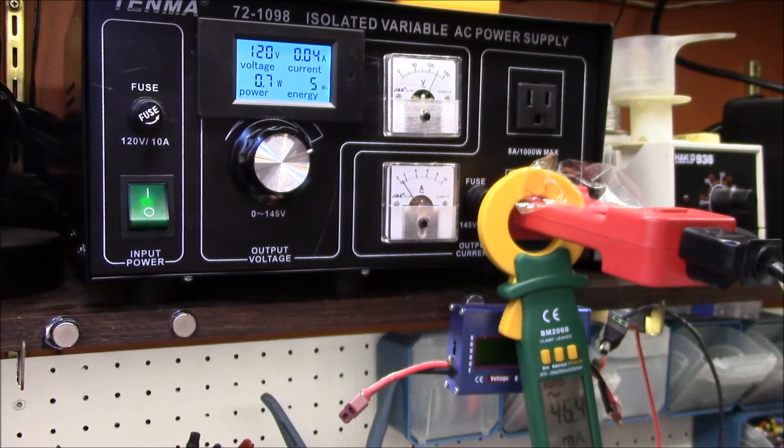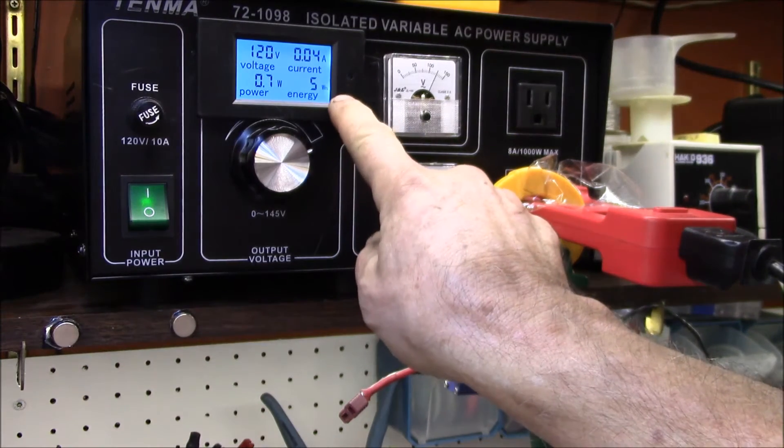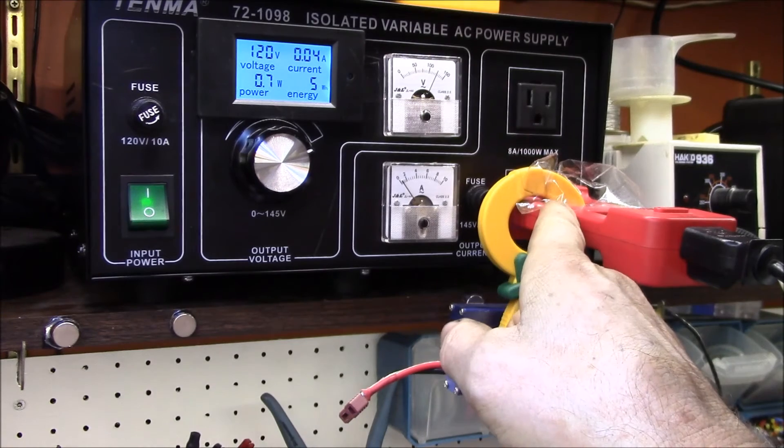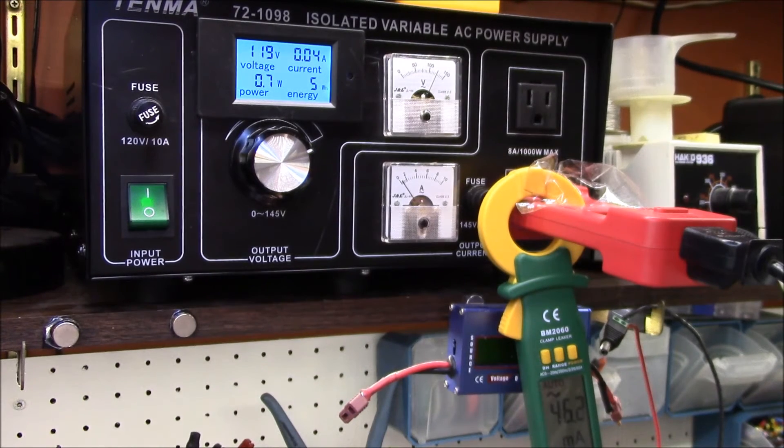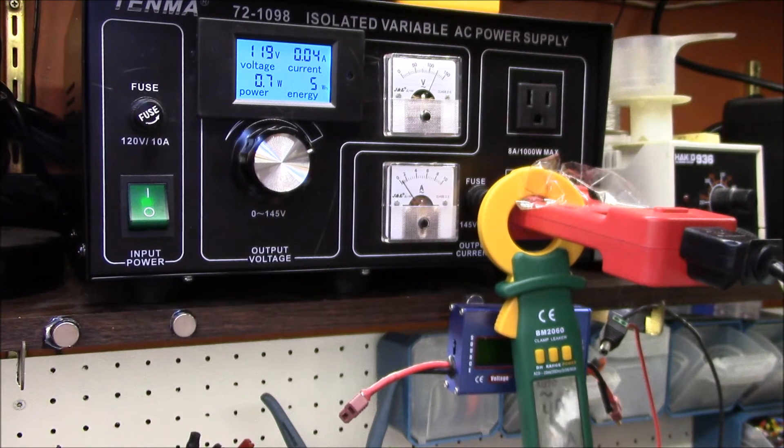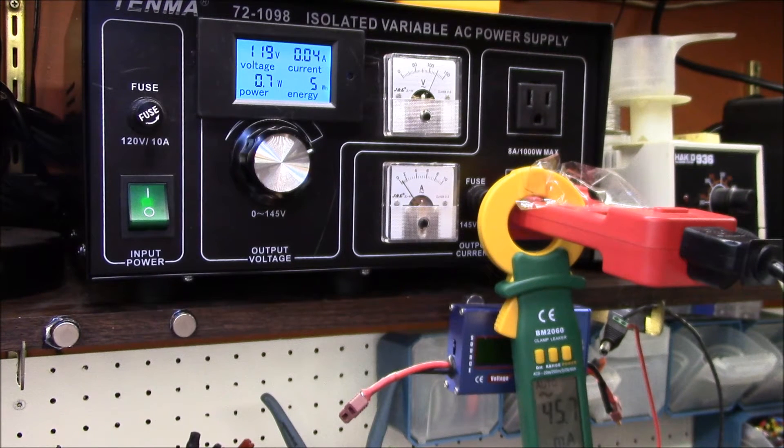This is the PZEM021 and then plugged in over here I've got my PZEM061 which was the original meter. It looks like it's taking about seven tenths of a watt, 0.04 or 40 milliamps, and my small clamp meter is saying about 45 milliamps.